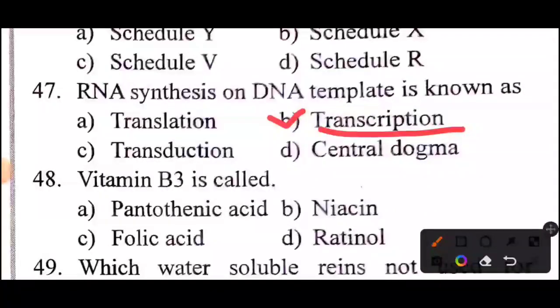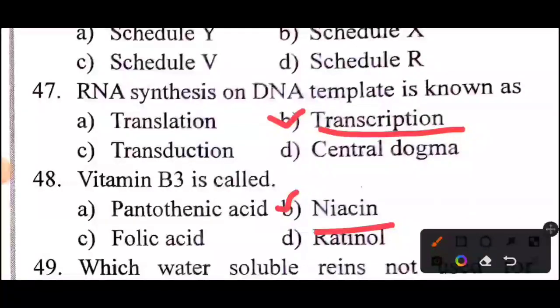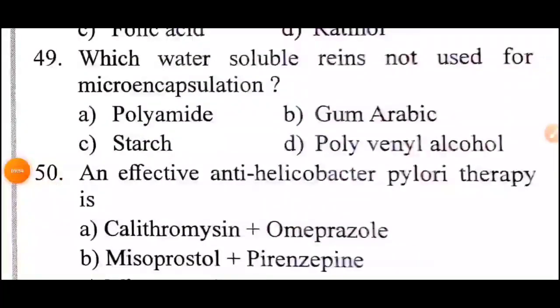Question 48 of 60: Vitamin B3 is called? Answer is Option B: Niacin.